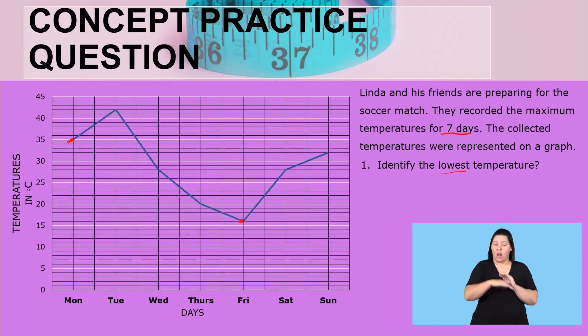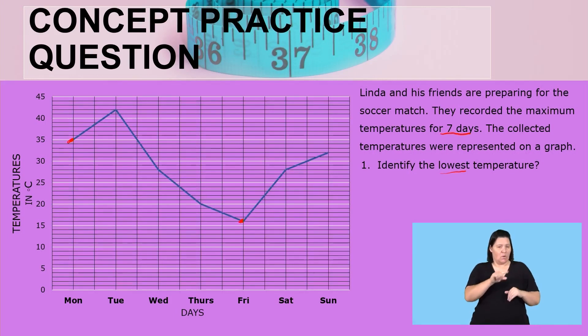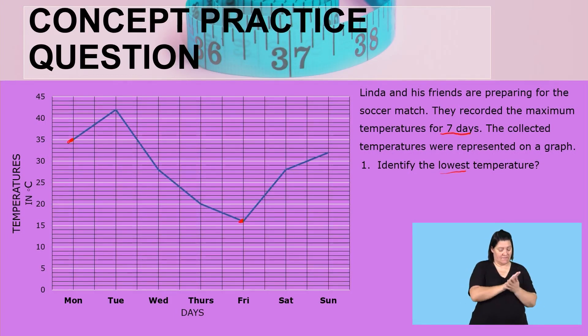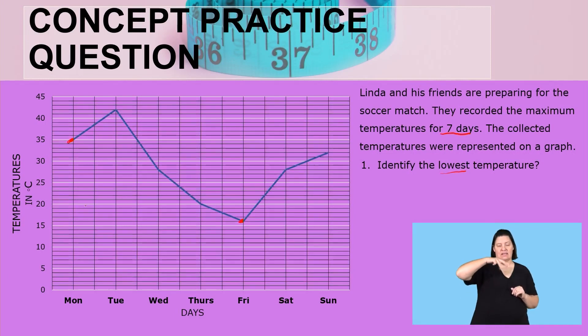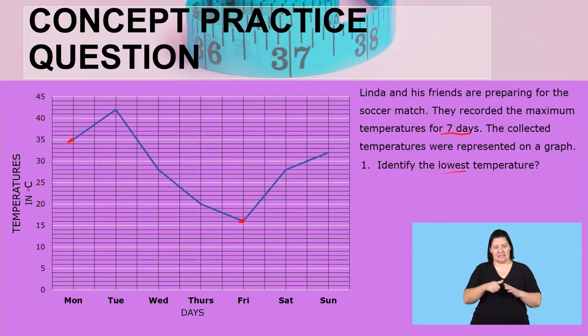Can we identify what the lowest value is? Because this is 15, I want you to be able to read the values in between. You can see there is a difference of five between the two, so it is going to be 15, 16, 17, 18, 19, 20. First, make sure you are able to identify the values between the two so that you can tell the exact value. So this value is 16.